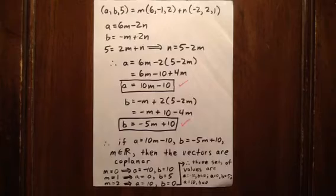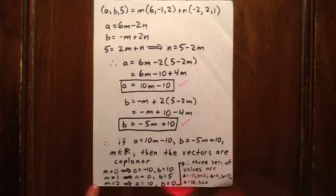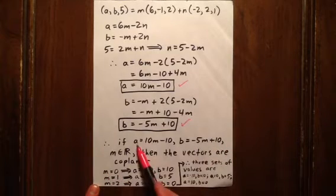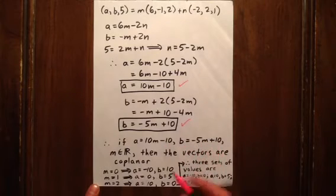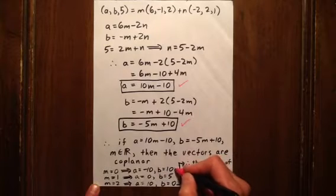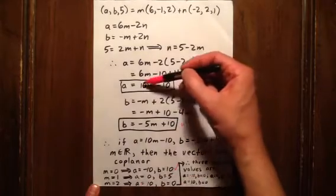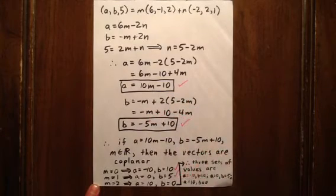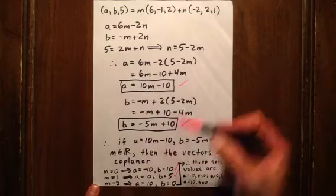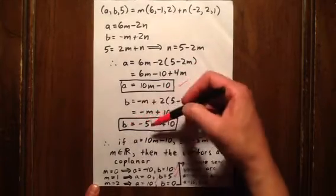We now have conditions on A and B in terms of M, so we can substitute different values of M. Letting M equal 0: A is 10 times 0 minus 10, so A is negative 10, and B is negative 5 times 0 plus 10, so B is 10. If M is 1: A is 10 times 1 minus 10, which is 0, and B is negative 5 times 1 plus 10, which is 5. If M is 2: A is 10 times 2 minus 10, which is 10, and B is 0.